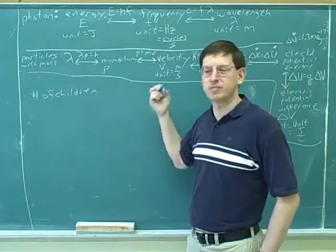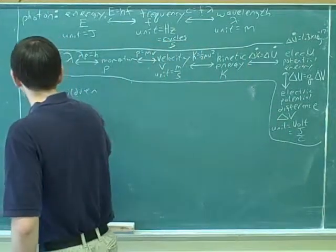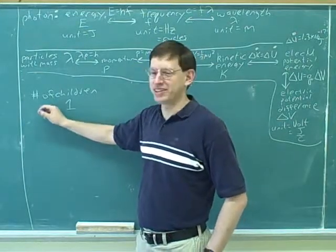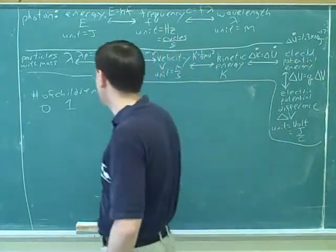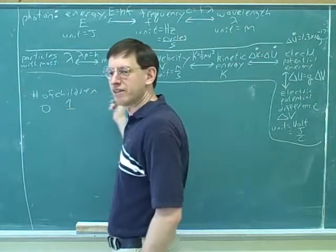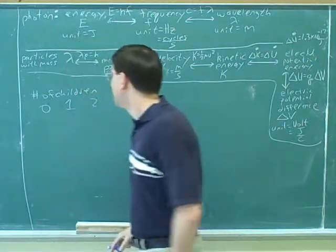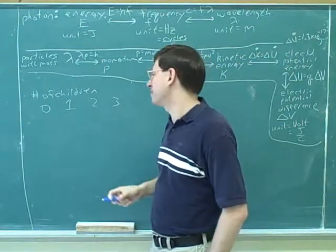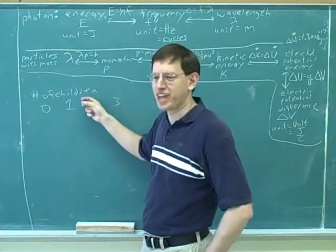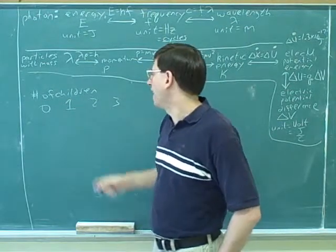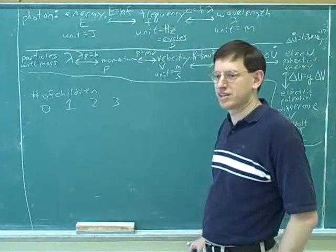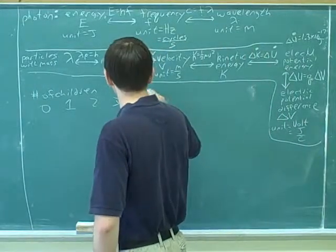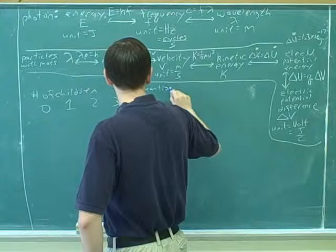What's the smallest possible number of children you can have? Maybe zero, then one, then two, then three. But could you have anything in between - like 1.5 or 2.5? No, you can't. So we say children are quantized - they can only take on discrete values.